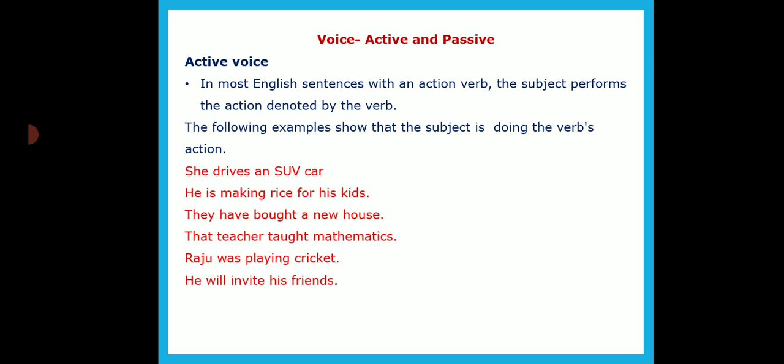If I give you examples, then you will be able to identify the active voice easily. Here are a few examples. 'She drives an SUV car.' Here, the importance is given to the subject and how the subject performs the action, which is received by a direct object. So, 'she' is the subject, 'drives' is the verb, and 'an SUV car' is the direct object.